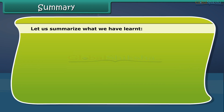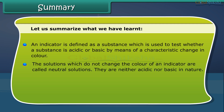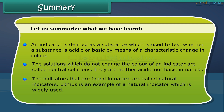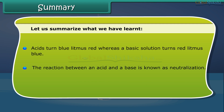Let us summarize what we have learned. An indicator is a substance used to test whether a substance is acidic or basic by means of a characteristic change in color. Solutions which do not change the color of an indicator are called neutral solutions — they are neither acidic nor basic. The indicators found in nature are called natural indicators. Litmus is a widely used natural indicator. Acids turn blue litmus red, whereas a basic solution turns red litmus blue. The reaction between an acid and a base is known as neutralization.